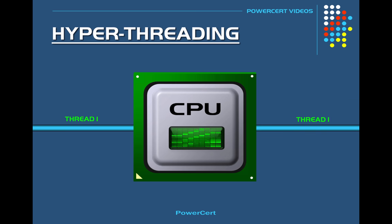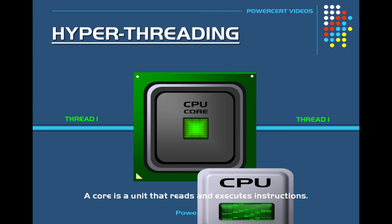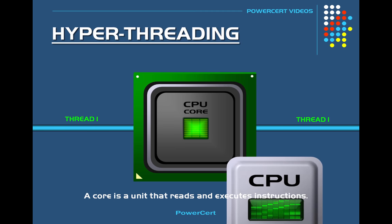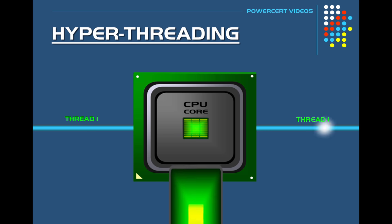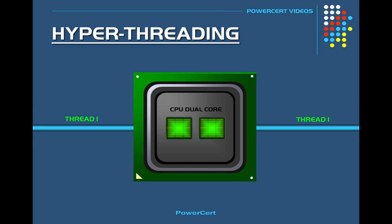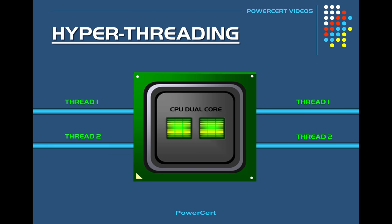In the beginning, a CPU would have a single core. A core is a unit that reads and executes instructions. Later on, manufacturers started to add additional cores to a CPU so that it can read and execute more instructions at a time, which dramatically increased the performance of the CPU.